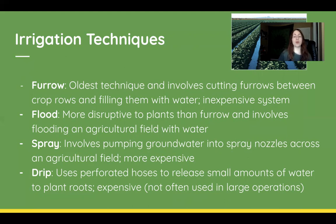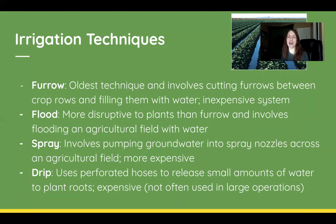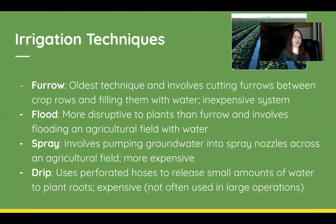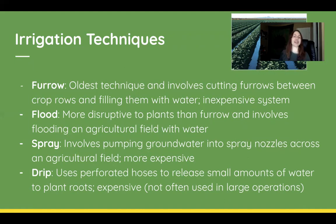The first and oldest technique is furrow irrigation, which involves cutting furrows between crop rows and filling them with water. I included a picture to show what a furrow looks like. It's a relatively inexpensive system and is about 65% effective.